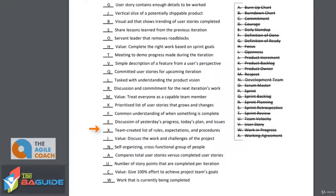Next is a team-created list of rules, expectations, and procedures. This is a working agreement — it's kind of like a rule set for the team. Since the team is going to be collaborating on all these various stories and through these various sprints, it's important to set those expectations up front as to what is expected of the team.